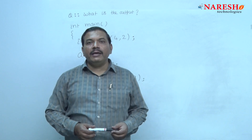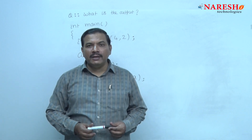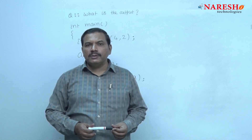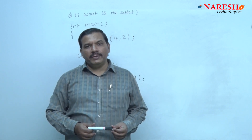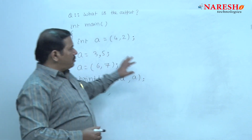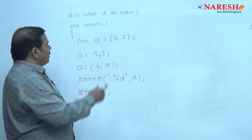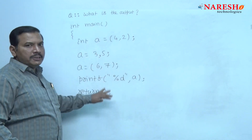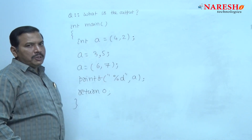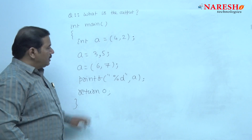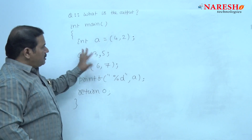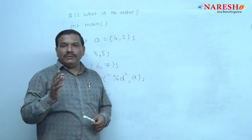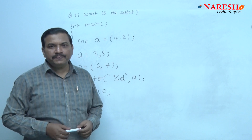Hi guys, my name is K.V. Ramana. Welcome to the MCQs in C programming. This question asks you to predict the output of the following code. This is a question on the comma operator.